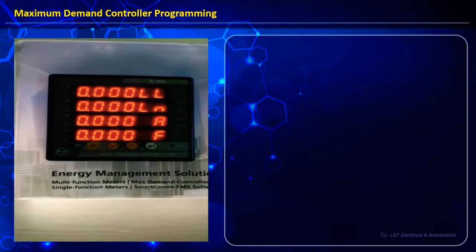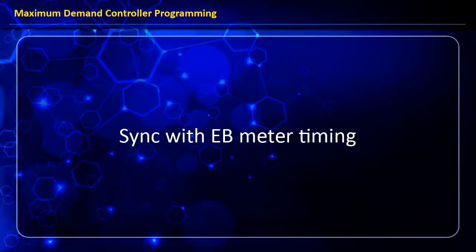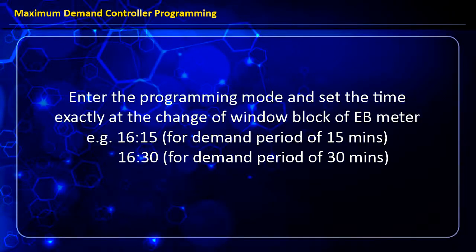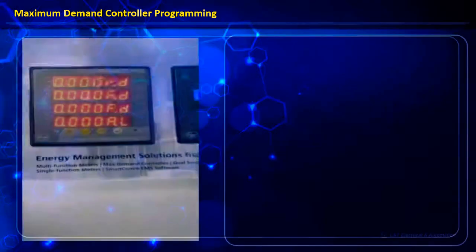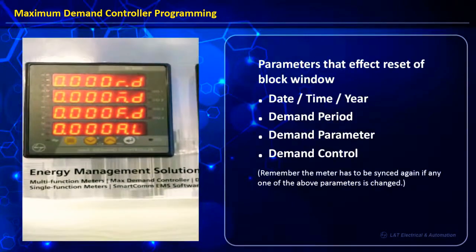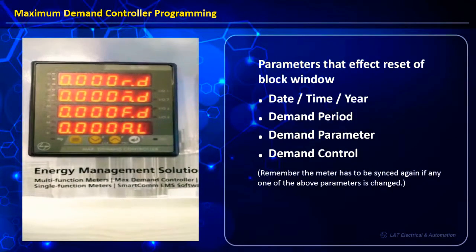There is one more important step: syncing with the EB meter. We enter into programming mode and set the time exactly at the change of the window block of the EB meter. Remember that at any point, if we update any values of date, time, year, demand period (15 or 30 minutes), demand parameters such as wattage, VA, or VAR, or even the demand type as sliding or block window, this will cause the start of the block window to get reset.